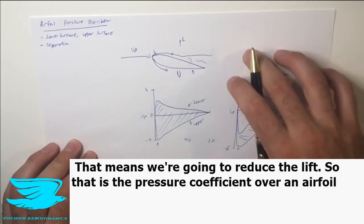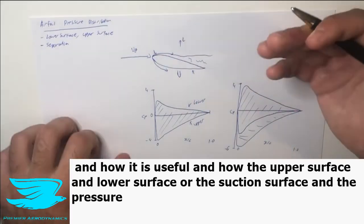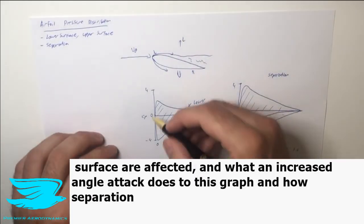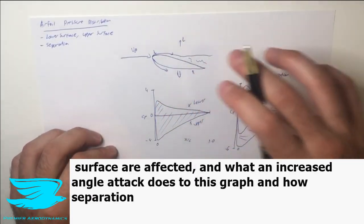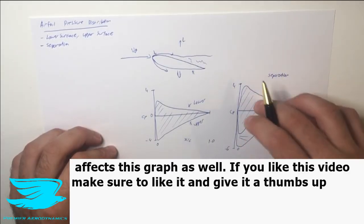So that is the pressure distribution over an airfoil and how it is useful. How the upper surface and lower surface, or the suction surface and the pressure surface, are affected, and what increased angle of attack does to this graph and how separation affects this graph as well.